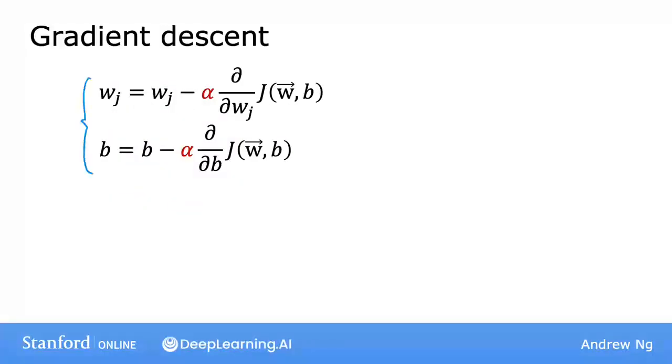As a reminder, here's the gradient descent rule. And one of the key choices is the choice of the learning rate alpha.